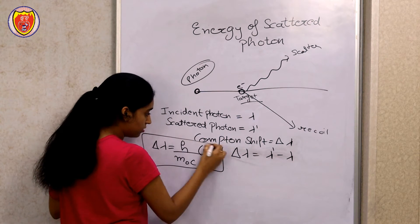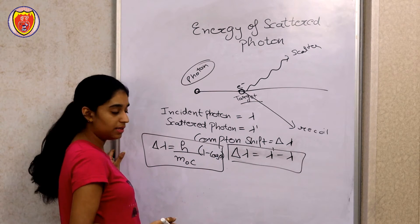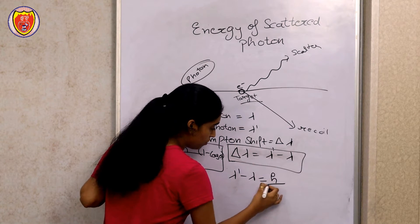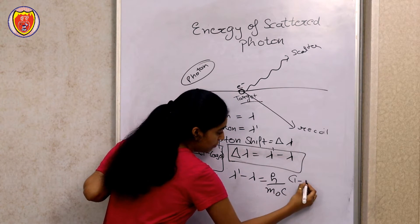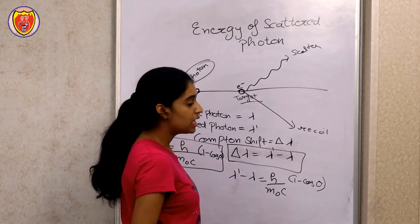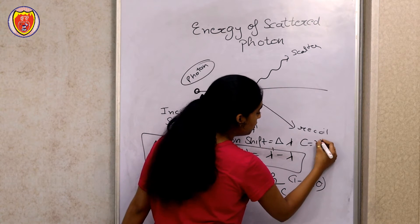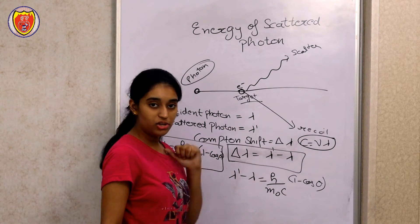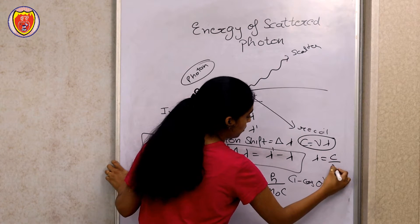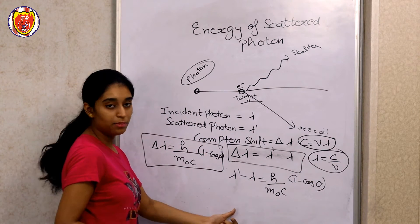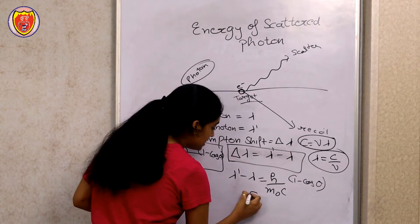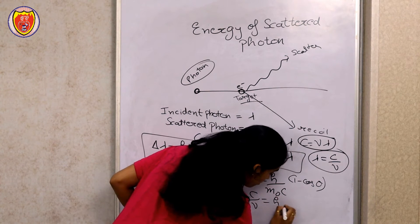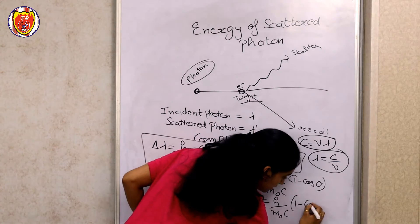So we can equate it: lambda dash minus lambda is equal to h upon m₀c (1 minus cos theta). Now I know that c value is nu into lambda, so lambda is equal to c upon nu. So substituting, this will become h upon m₀c (1 minus cos theta).